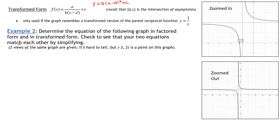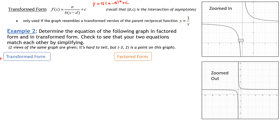We're going to get an equation in transformed form of this graph — both zoomed out and zoomed in — and then we're going to check. I can see the point (−3, 2) on the graph. Normally you'd be able to find a coordinate yourself. We're going to do both forms: transformed form and factored form. Let's start with transformed form.